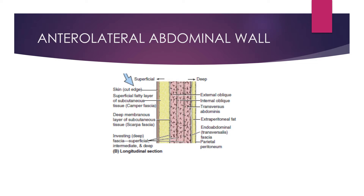This subcutaneous tissue is divided into two parts: a fatty layer which is called Camper's layer, and then we have Scarpa's layer, which is the deep membranous layer of the subcutaneous tissue or the superficial fascia.